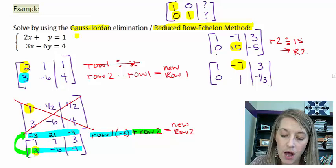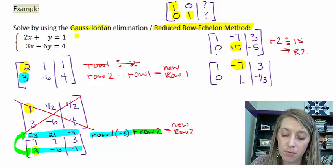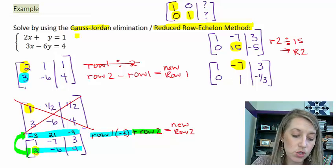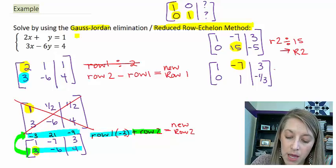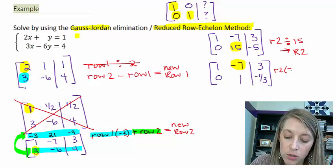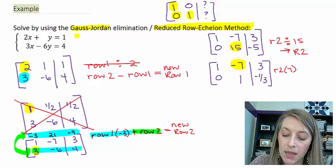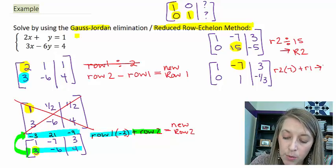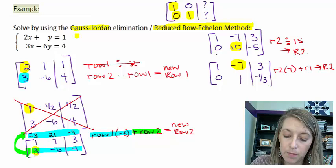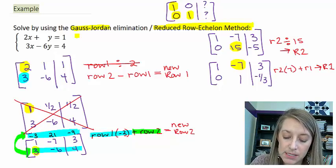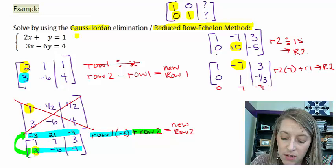I need to compare it to the number below it, which is 1. So that means I'm going to take my row 2, multiply it by 7, and then I'm going to add that to row 1. And I'm going to replace that in my new row 1. So my row 2 times 7: 0 times 7 is 0, 1 times 7 is 7, and negative 1 third times 7 is negative 7 thirds.